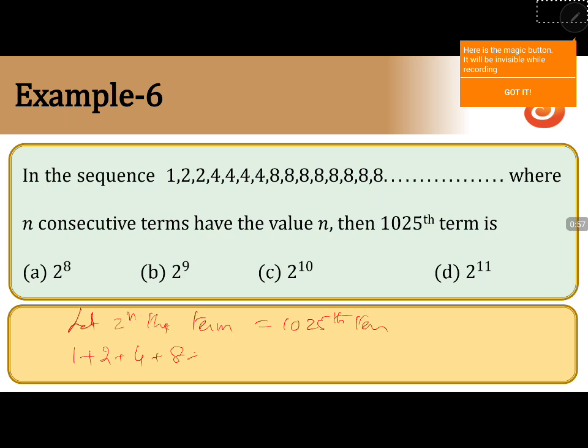It goes on like this and this is sum up to 2 power n minus 1 number of terms be less than 1025 because what is 1025th term? So what is 2 power n minus 1 will calculate up to, thus it will be done.